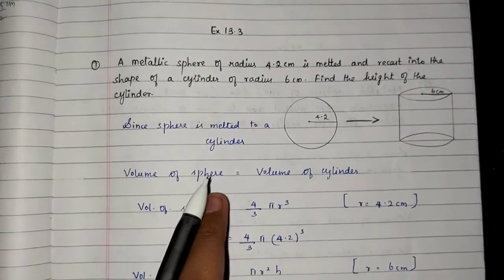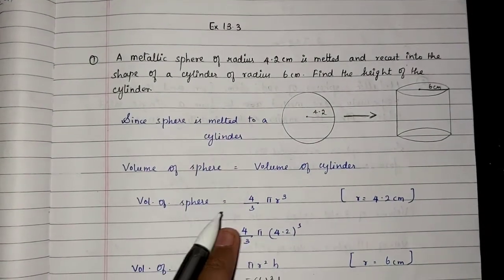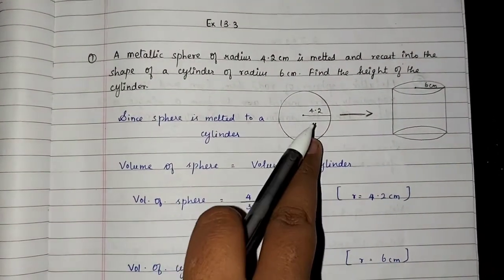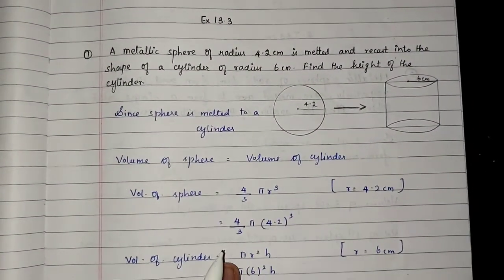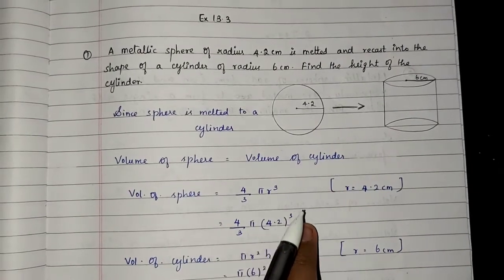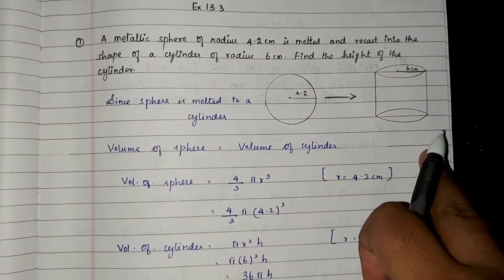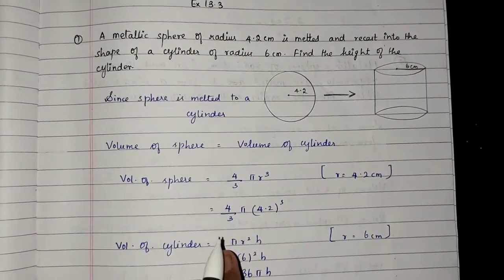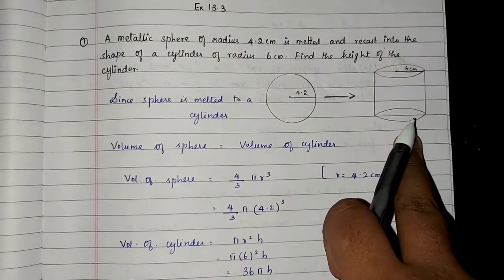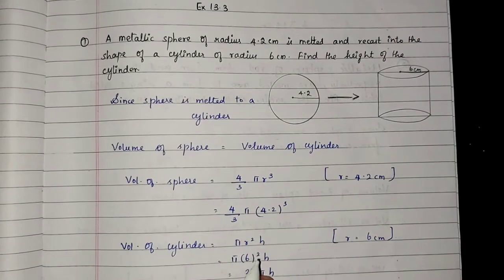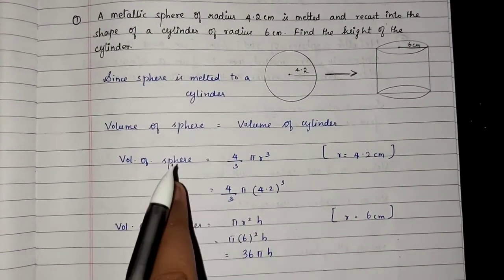We find that the volume of the sphere equals the volume of the cylinder. Volume of sphere is (4/3)πr³, with r = 4.2 cm. So volume = (4/3) × π × (4.2)³. Volume of cylinder is πr²h, where r = 6 cm, so πr² = π × 36 × h.